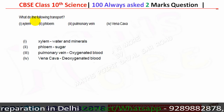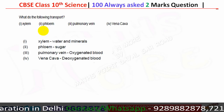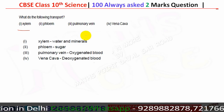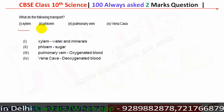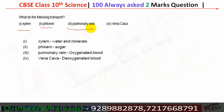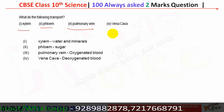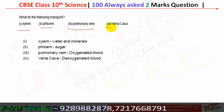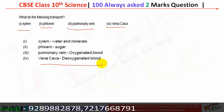What do the following transport? Xylem transports water and minerals. Phloem transports sugar. Pulmonary veins transport oxygenated blood. Vena cava transports deoxygenated blood.